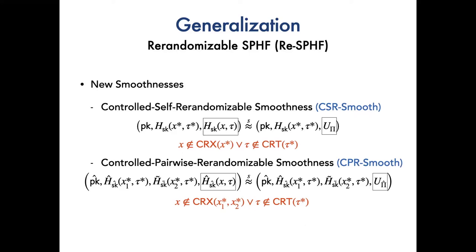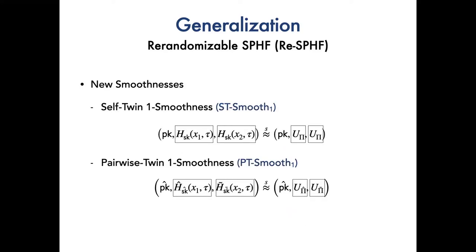The controlled pairwise randomizable smoothness says that conditioned on fixed pK hat, the hash value h hat, sk hat, x1 star, tau star, h tilde, sk tilde, x2 star, tau star, for any non-language element x and tag tau, the hash value is statistically indistinguishable from the uniform distribution over the space pi, pi hat. Also, it is required that the x does not belong to CRx_x1 star, x2 star, or the tau does not belong to CRt_tau star.